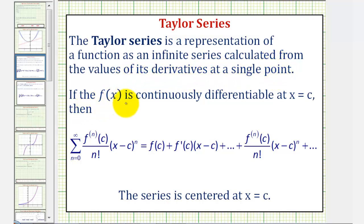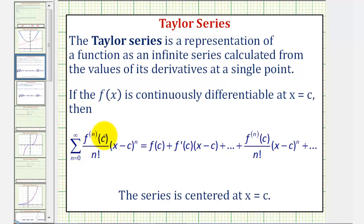If f of x is continuously differentiable at x equals c, then the Taylor series is defined here, where the numerator is always going to be the nth derivative evaluated at c, divided by n factorial times the quantity x minus c, raised to the power of n.